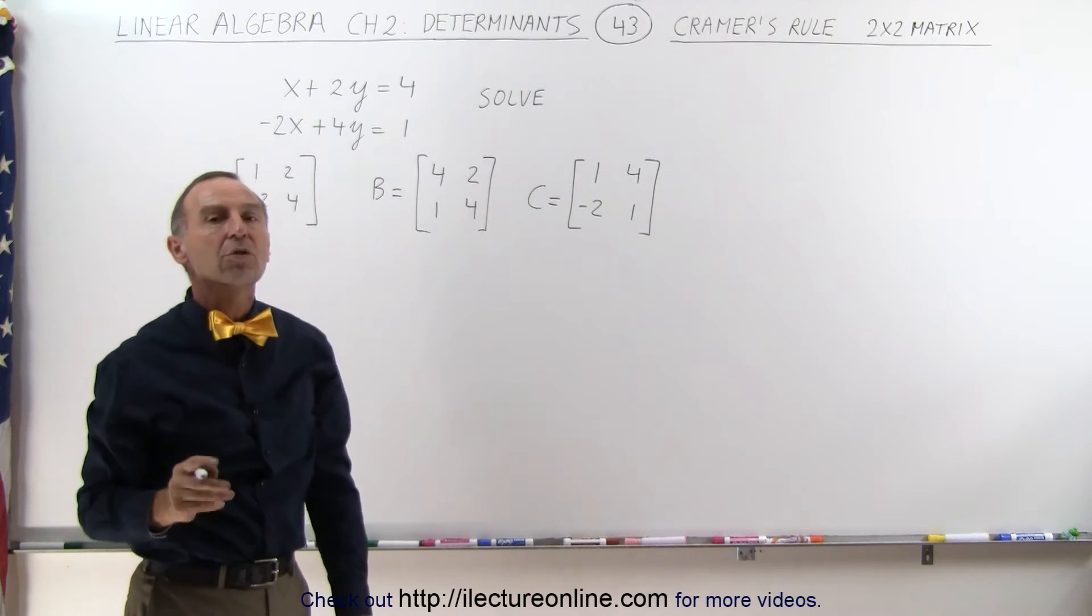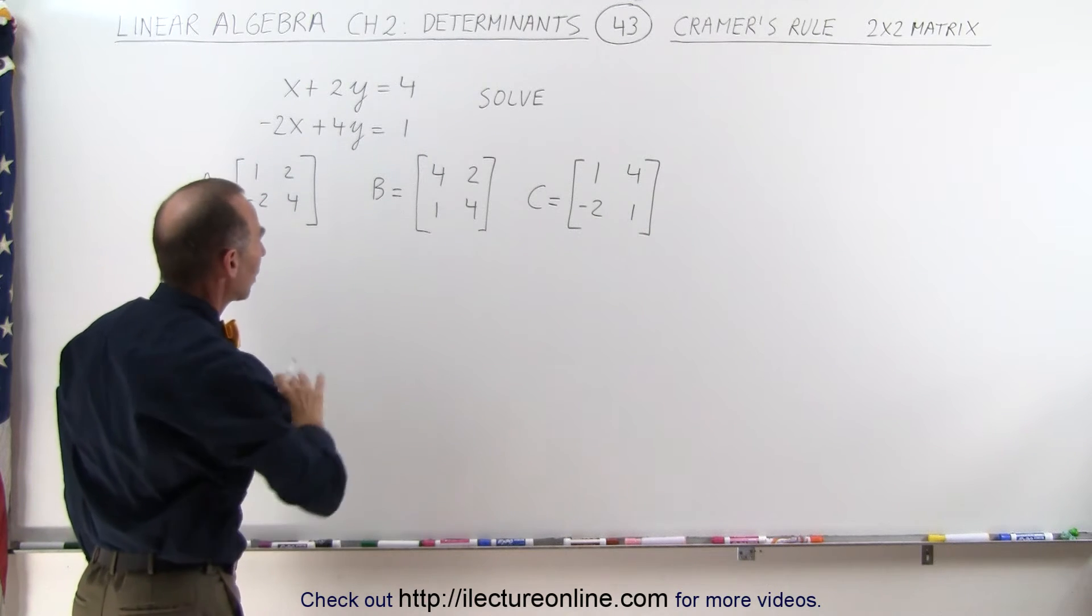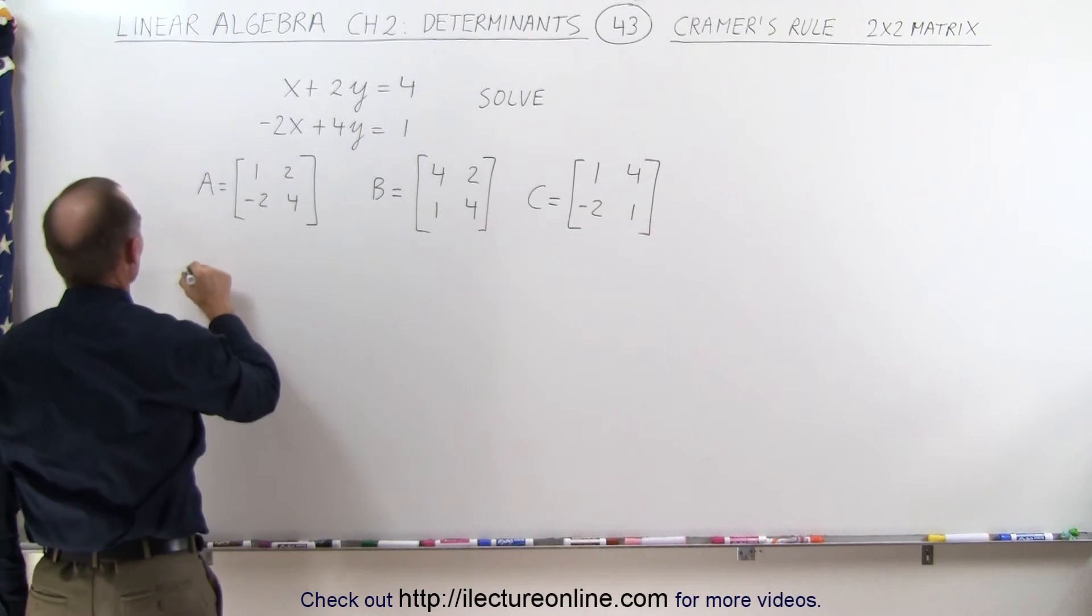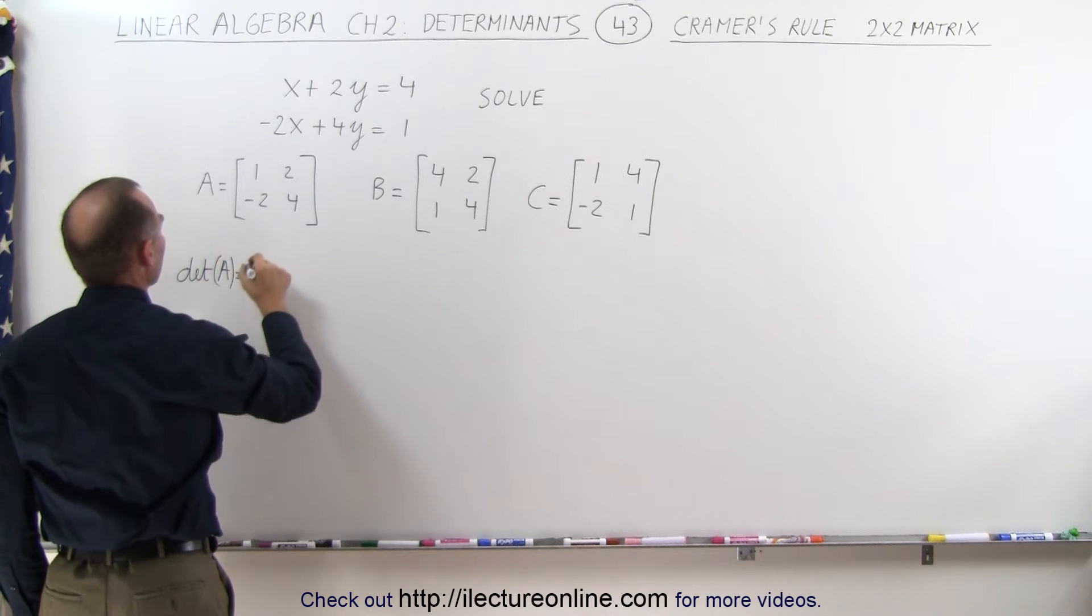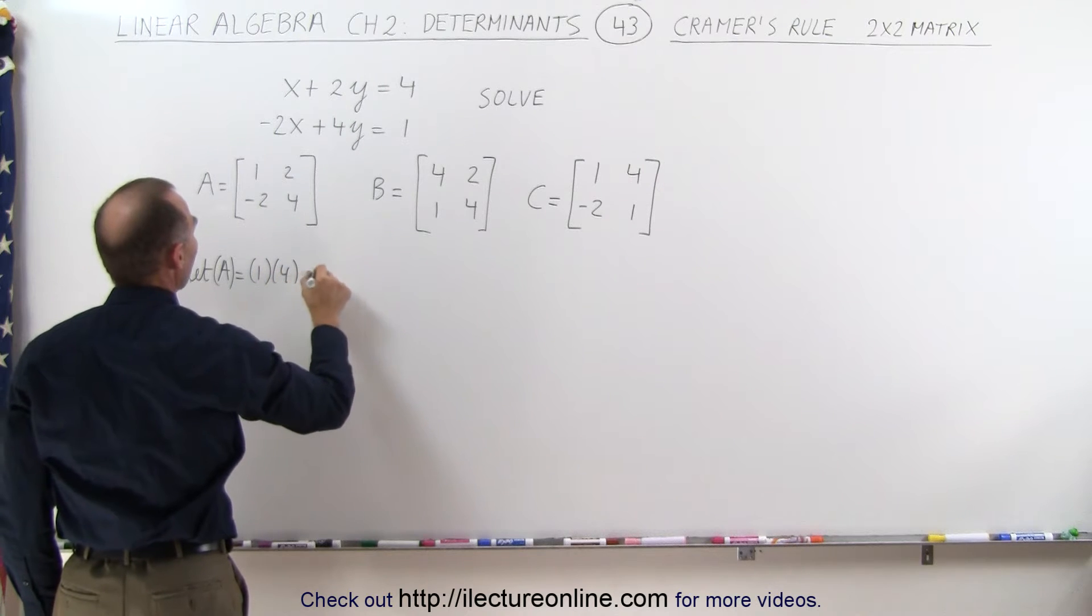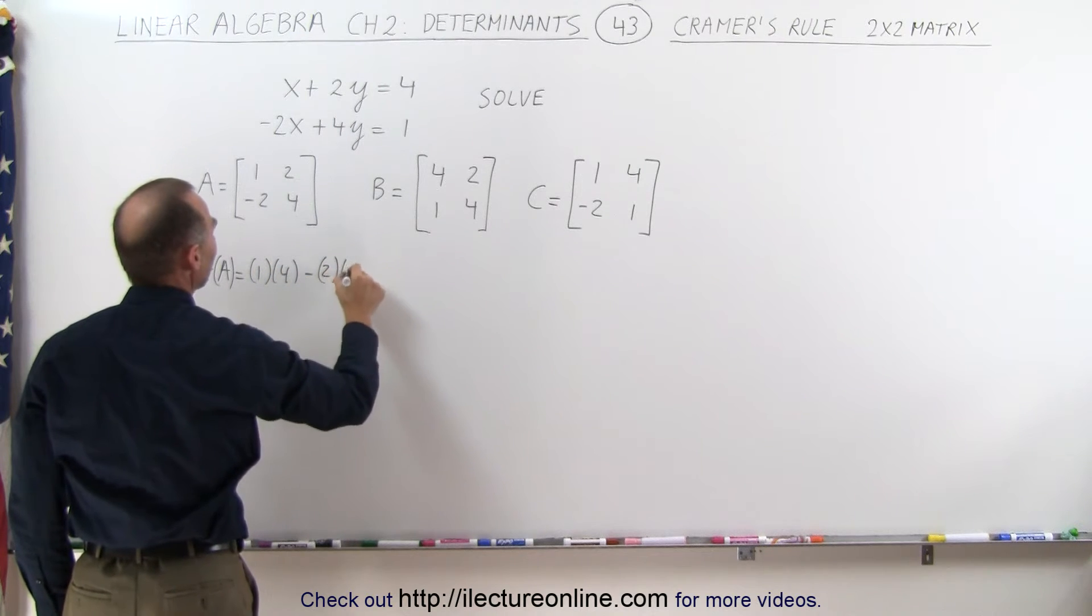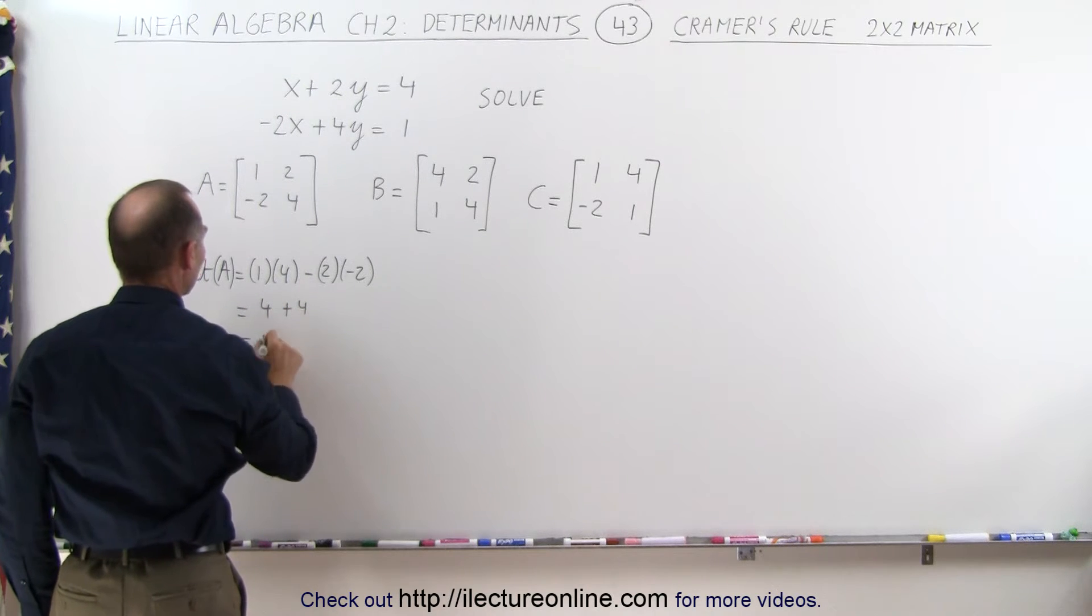The next thing we're going to do is find the determinant of each of these matrices. So the determinant of A is equal to 1 times 4 minus 2 times -2, which is equal to 4 plus 4, which is equal to 8.